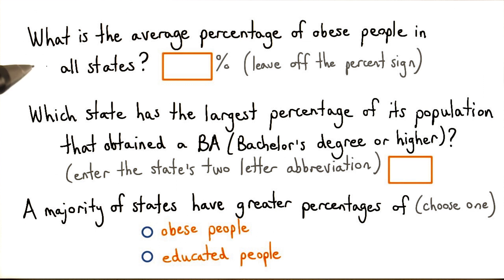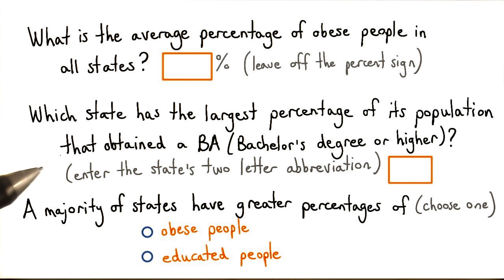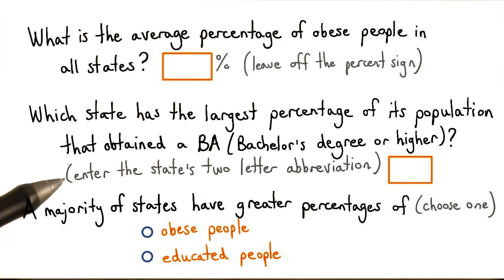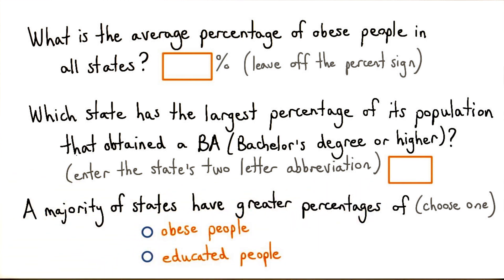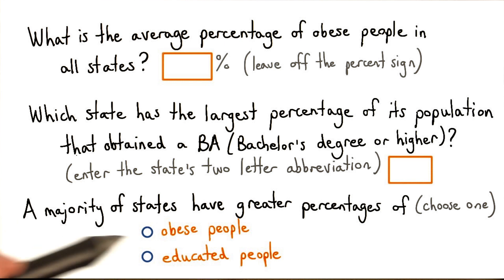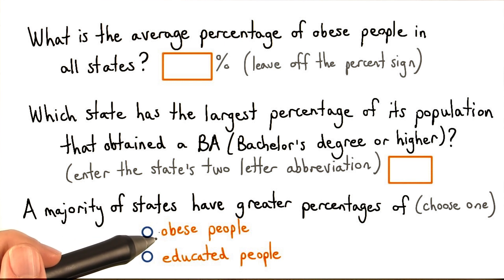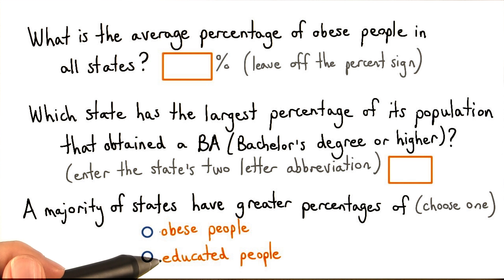Then answer these next questions: What's the average percentage of obese people in all the states? Which state has the largest percentage of its population that attained a bachelor's degree or more? Enter that two-letter state abbreviation. And finally, do more states have a majority of obese people or educated people? Choose one of these.